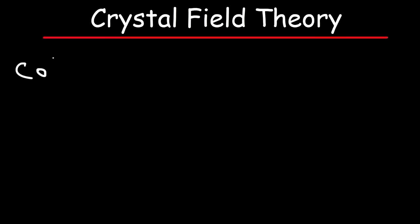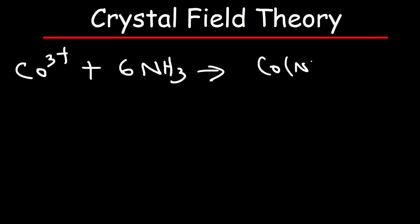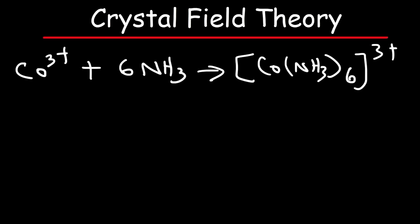Let's say we have the cobalt 3+ ion, and we're going to react it with ammonia. It's going to form an octahedral complex ion. The reason why it's octahedral is because the cobalt is attached to 6 ammonia molecules. Ammonia in this chemical reaction is known as a ligand — it's attached to the transition metal ion, cobalt 3+. What happens is that the energy of the d orbitals in the cobalt ion changes as a result of this interaction with the ligand.